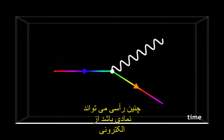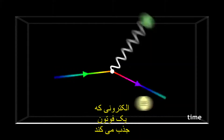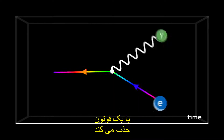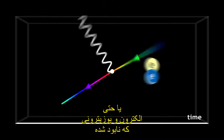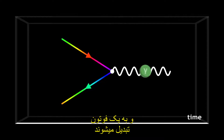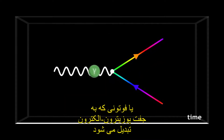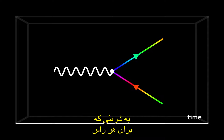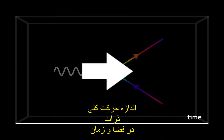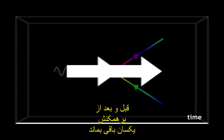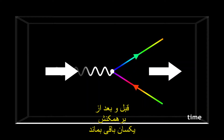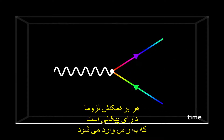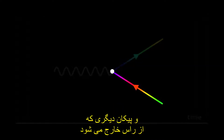Such a vertex can symbolise an electron which emits a photon, an electron which absorbs a photon, a positron which emits a photon or absorbs a photon, or even an electron and a positron which annihilate into a photon, or a photon which converts into an electron-positron pair. All these interactions are allowed, provided that for each vertex the overall momentum of the particles in space and time, before and after the interaction, remains the same. The electric charge must also be conserved. Each interaction necessarily has an arrow that enters and another that leaves the vertex.